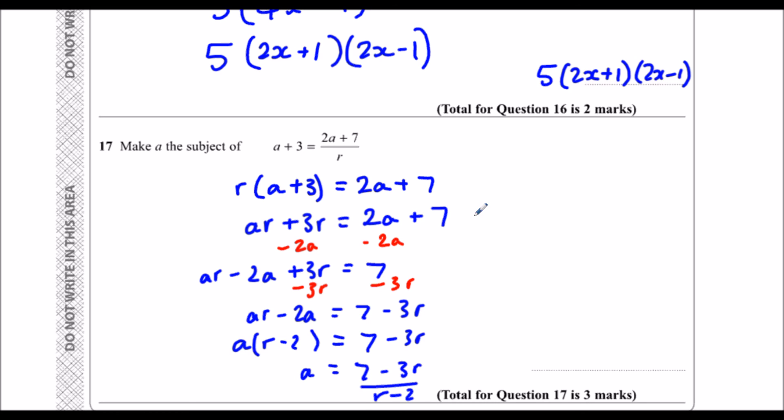And that leaves me with the final answer: a equals (7 minus 3r) over (r minus 2).